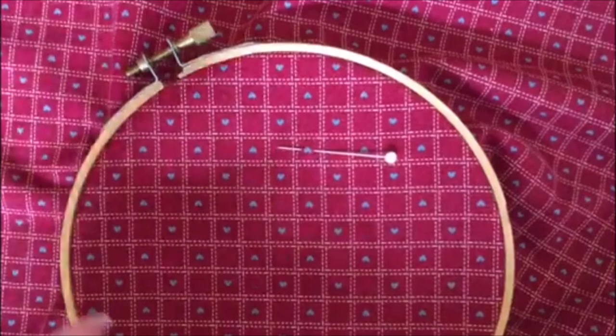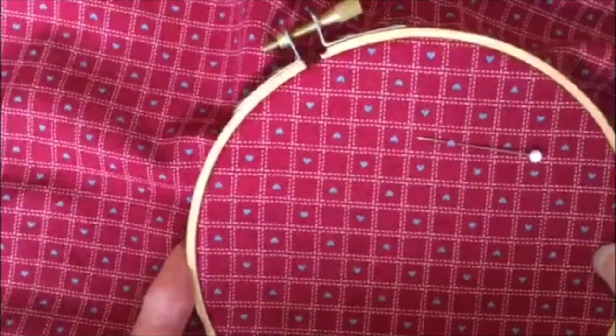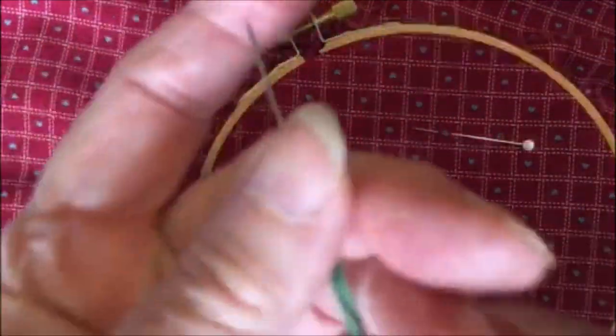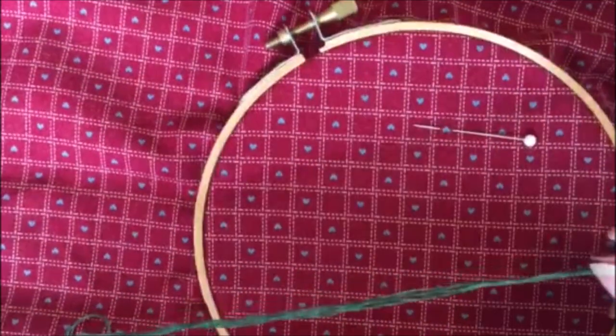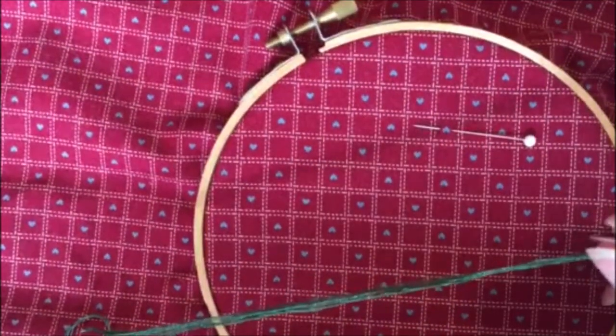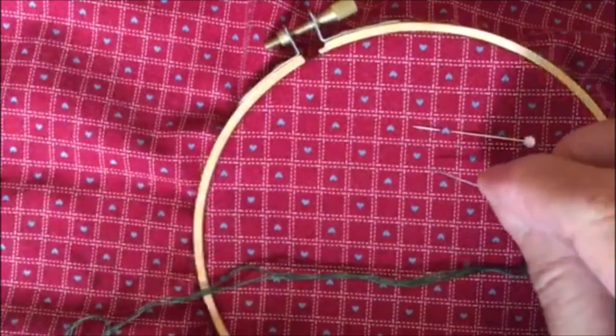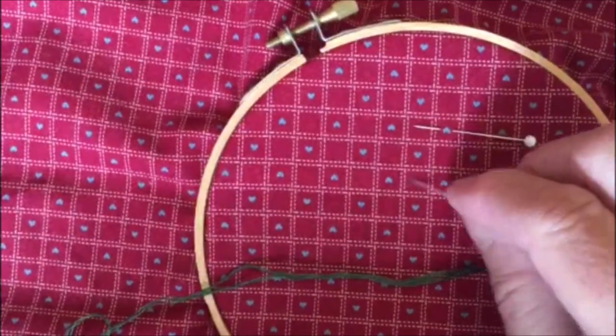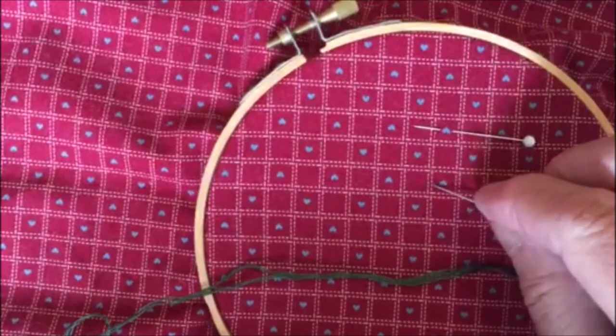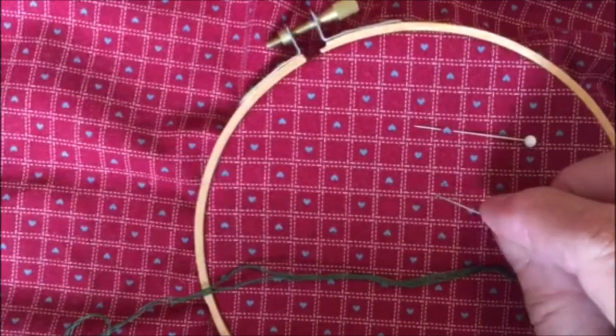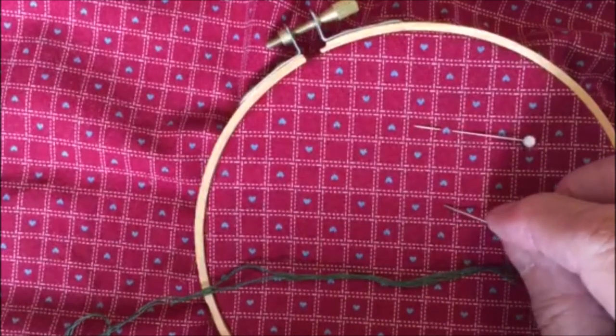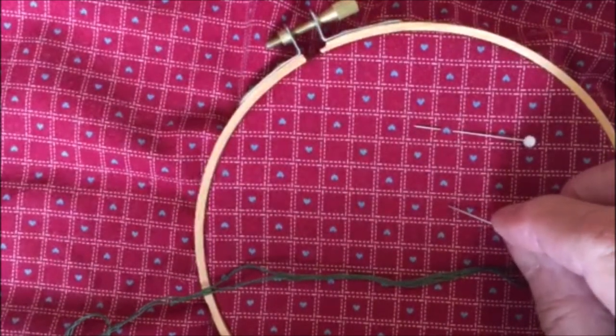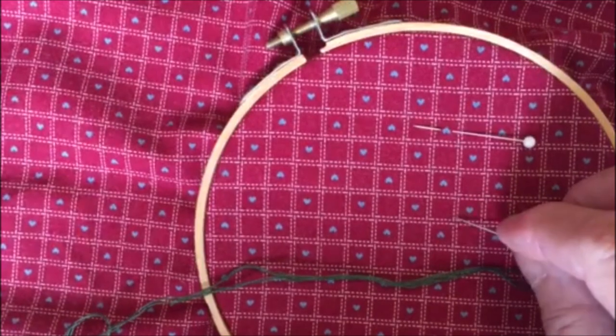Before you begin stitching you want to put your fabric into an embroidery hoop and also thread your needle. The number of strands of embroidery thread used depends on the size of the little squares. My fabric, the squares are slightly larger than a quarter of an inch. So I am going to use three strands of embroidery floss.